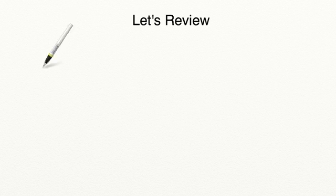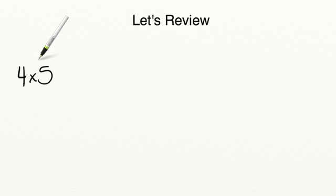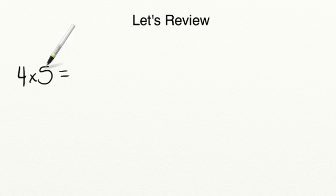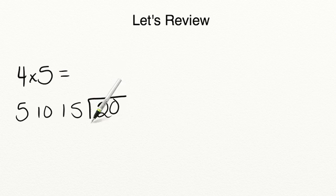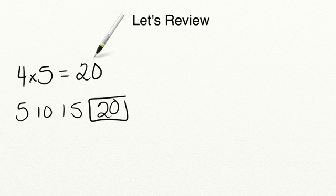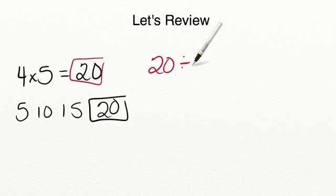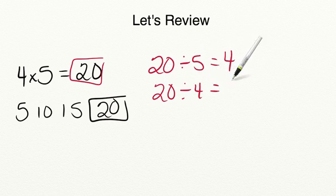Let's review what you've learned in today's lesson. Remember, multiplication is repeated addition. If you can't remember your multiplication facts, you can skip count. To get the product of 4 times 5, skip count 5 four times: 5, 10, 15, 20. So 4 times 5 equals 20. We also learned that you can take your product from multiplication and divide it to find a quotient — for example, 20 divided by 5 equals 4, or 20 divided by 4 equals 5.